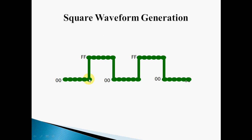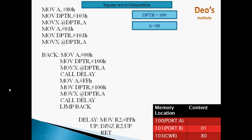When that delay is over, we send FFH. Again we send FFH and call delay. During that delay procedure, FFH will be continuously sent and converted by the DAC. Again the first six instructions are the same: MOV A, 80H, store it in 103H — which is the address of the control word register — and the next three for buffering.